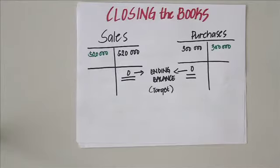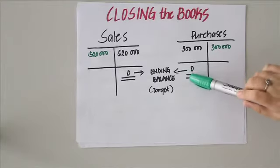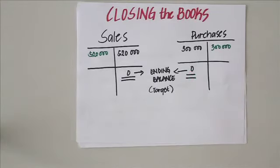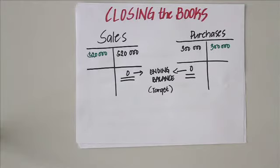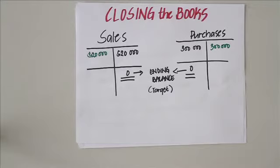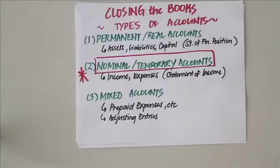The same goes for purchases — you want to get an ending balance of zero, so you simply make a credit of three hundred thousand. The basic concept is: when you want to close a balance, simply make a debit or a credit to the opposite of the account's normal balance. Sales has a normal credit balance, so to close it we made a debit.